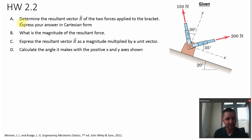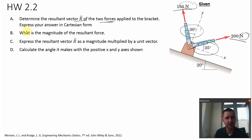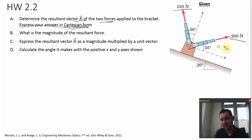This is a vector addition problem again — 2D vector addition. We have two vectors where we know the magnitude and the direction of both vectors. Part A of this problem asks us to find the resultant vector R, the sum of these two vectors applied to the bracket. These are two force vectors — notice they have units of newtons. Part A asks us to express the answer of the resultant vector in Cartesian form. We're not told whether to do this graphically or analytically, so analytical is the approach we want to use. It's easier and faster.